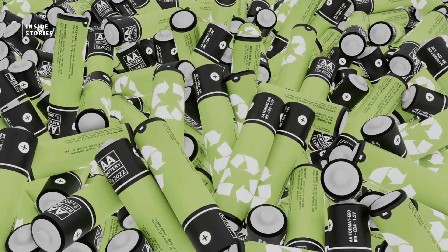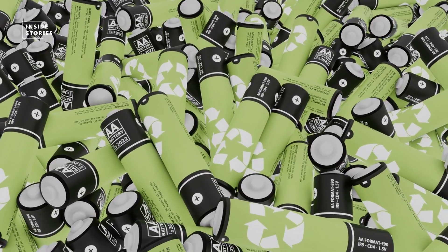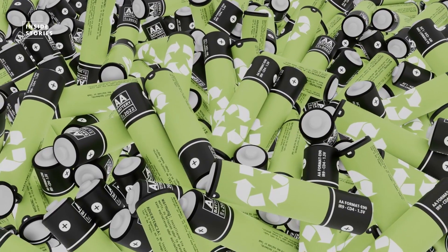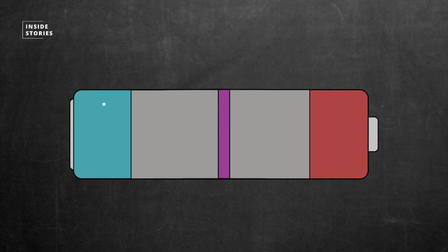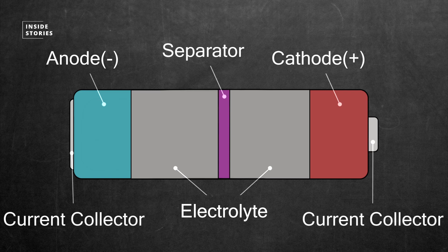But first, to understand what's going on, let's have a quick look at how ion batteries work in general. These batteries are made up of an anode, a cathode, a separator, an electrolyte, and two current collectors.